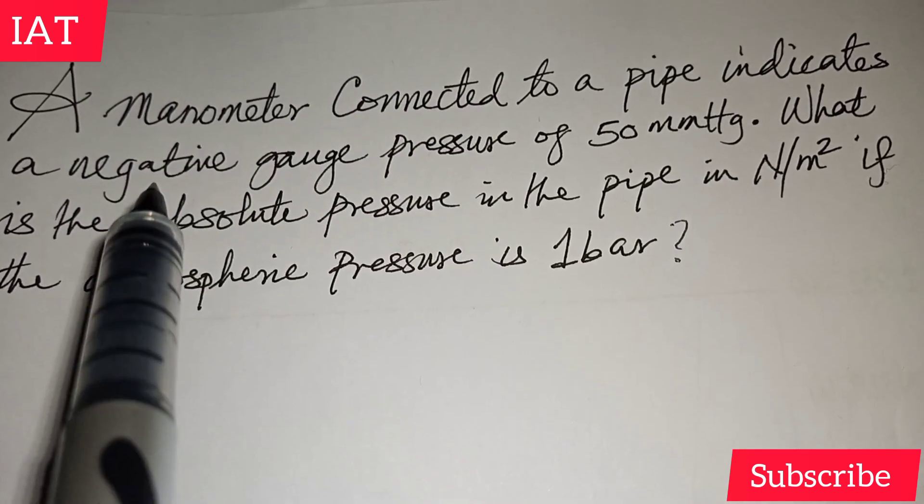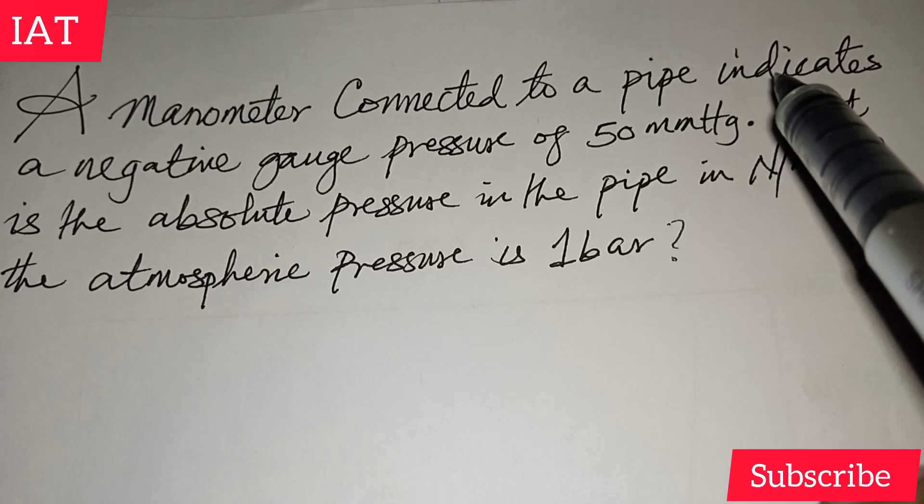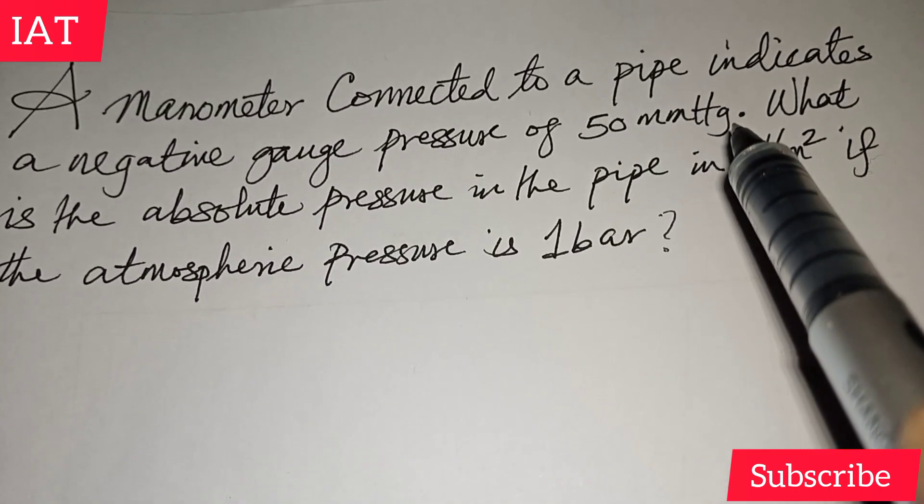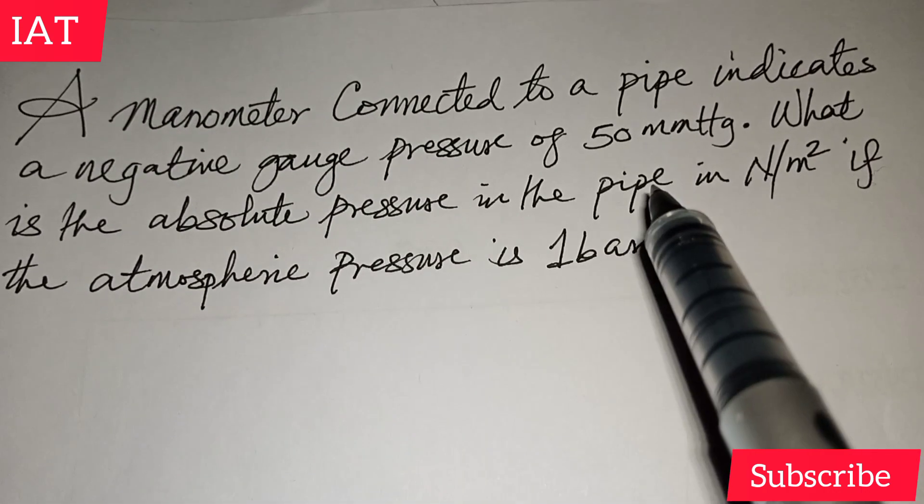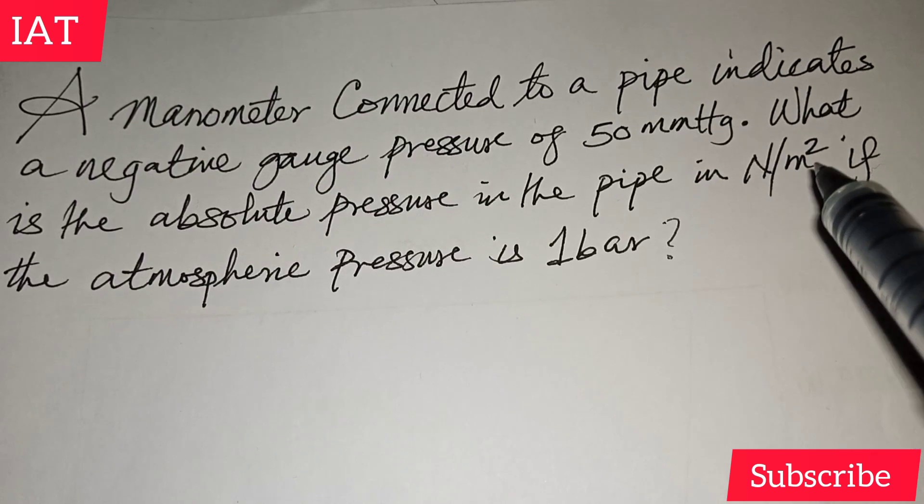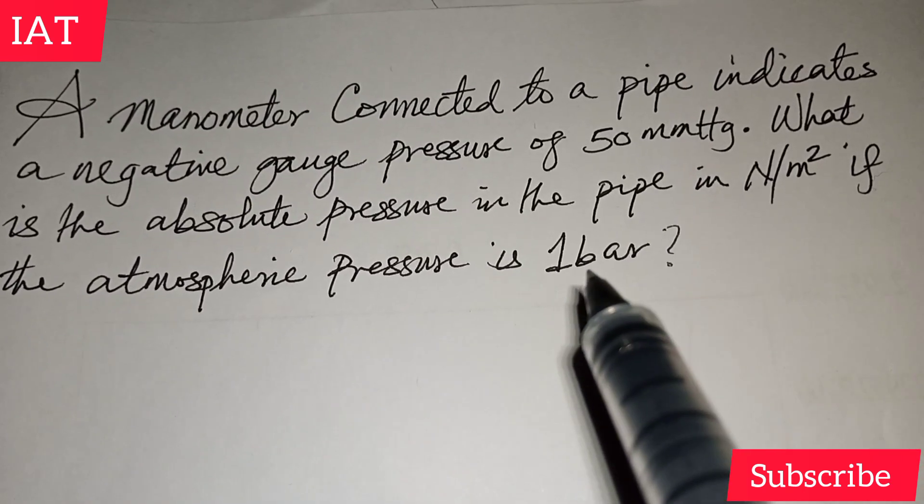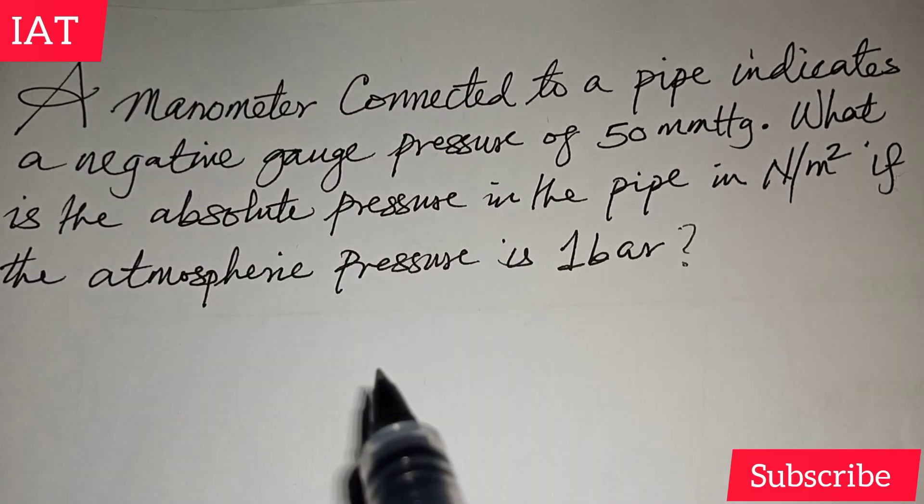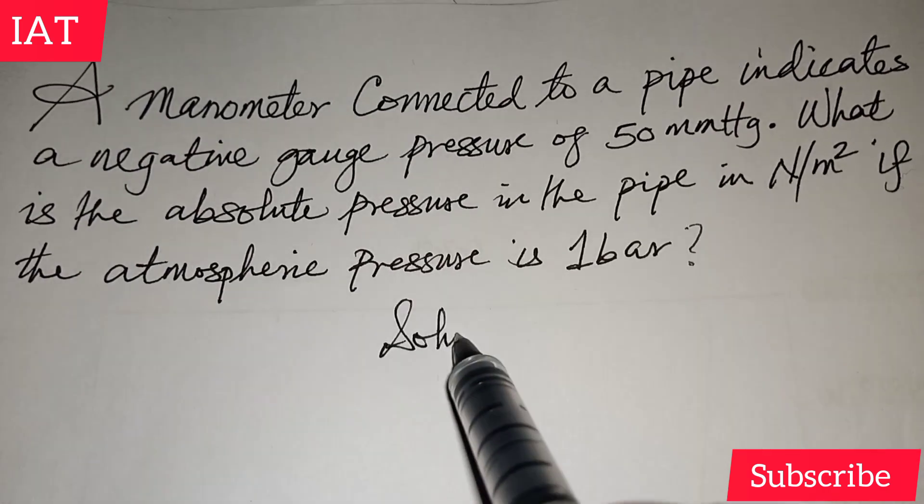This manometer connected to a pipe indicates a negative gauge pressure of 50 millimeter mercury. What is the absolute pressure in the pipe in Newton per meter square if the atmospheric pressure is one bar? It's actually a simple problem that we can be able to fix in one second.